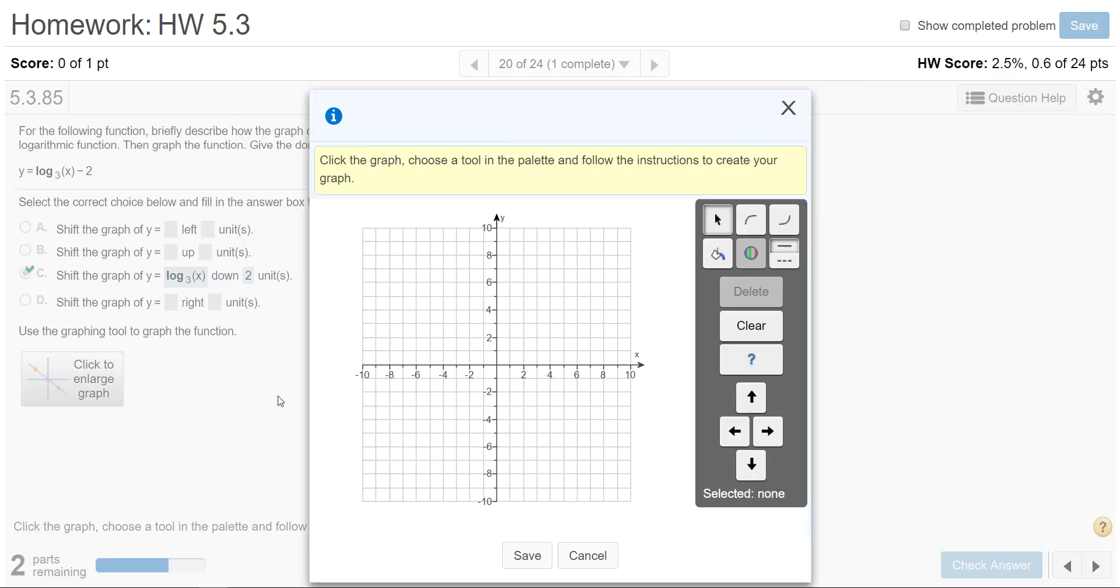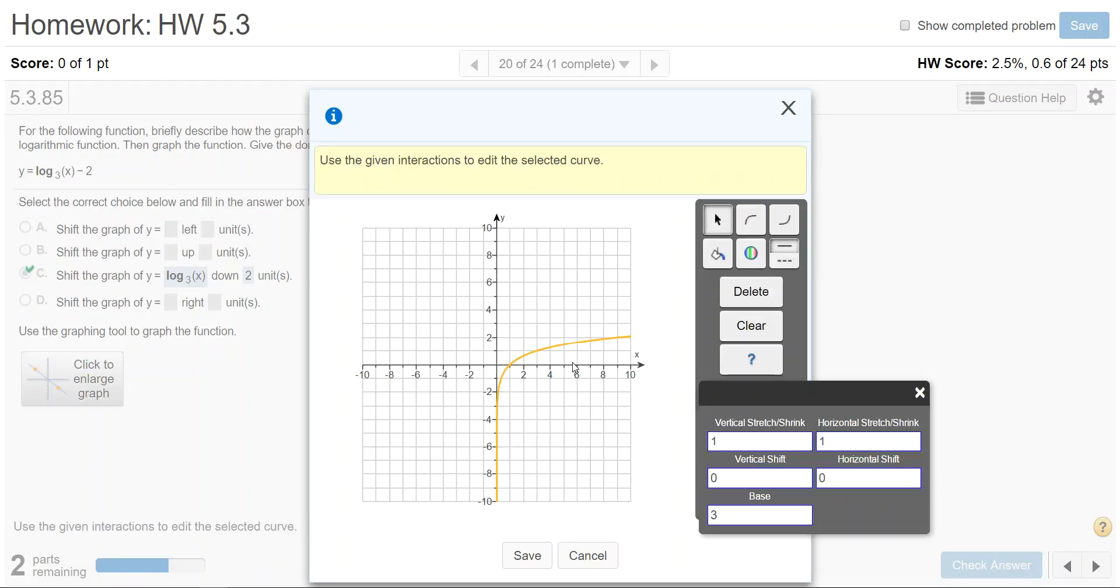Click the graphing tool button. Select the logarithm tool which is the vertical orientation and then click anywhere to start. It will automatically plot the original graph which has a vertical asymptote at x equals 0 and an intercept 1 to the right.